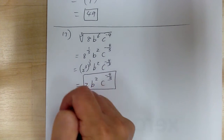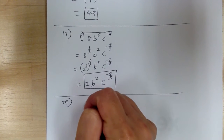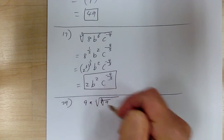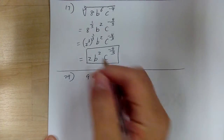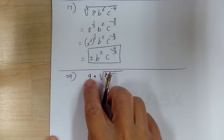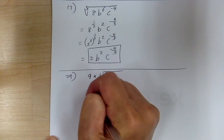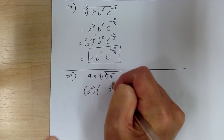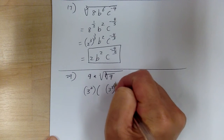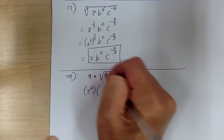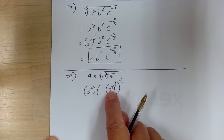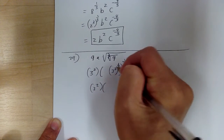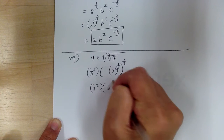Let's go to number 29. You have 9 times the square root of the cube root of 9. Convert this — 9 is 3 squared. The cube root gives you 1 third power, and the square root gives you 1 half power. So working out the inside, this becomes 3 squared times 3 to the 1 third power.